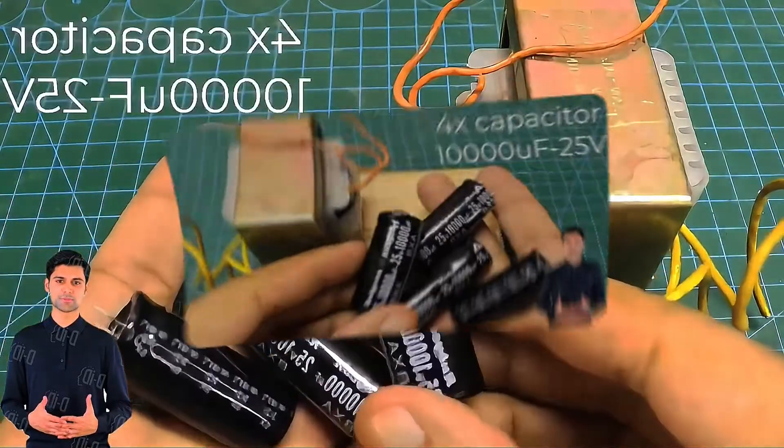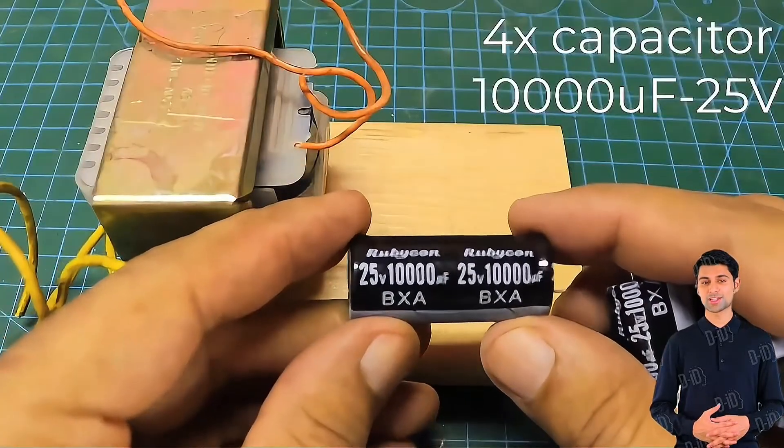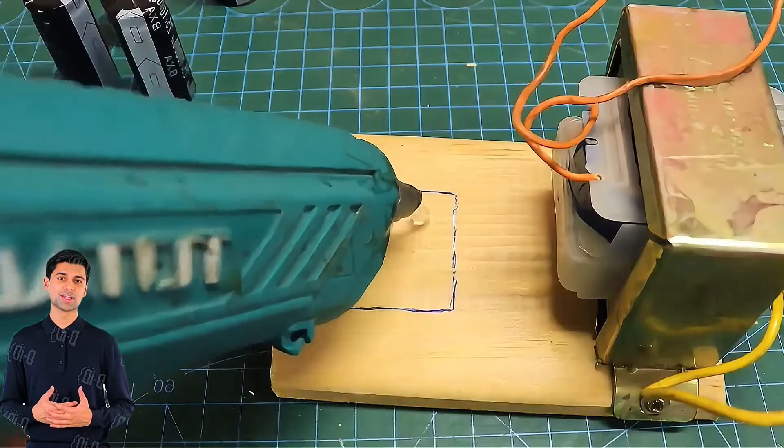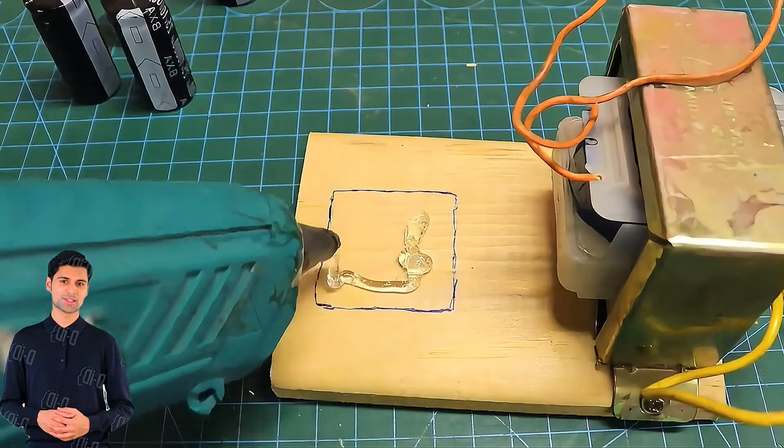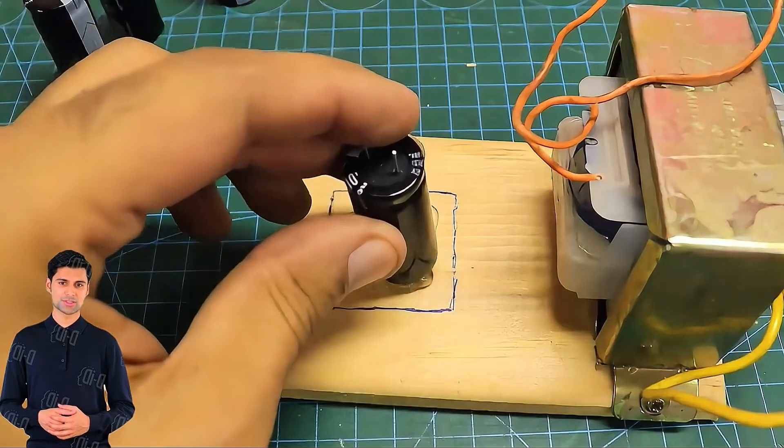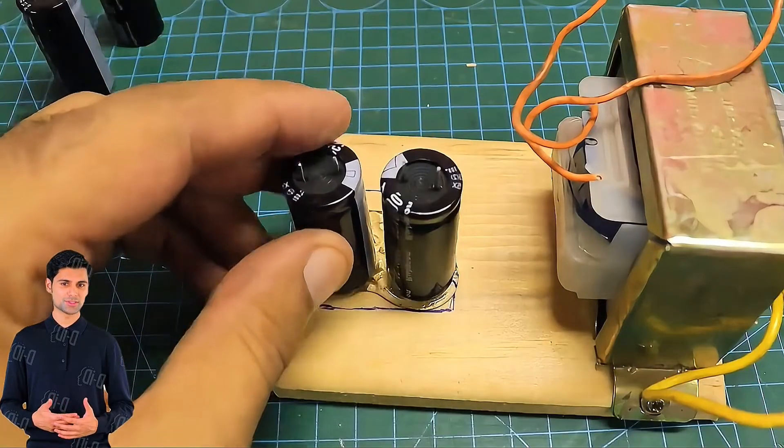The capacitor uses four electrolytic capacitors with a withstand voltage of 25 volts and a capacity of 10,000 microfarads. It is necessary to note that the withstand voltage of the capacitor needs to be more than 1.5 times higher than the output voltage of the transformer. Otherwise, it is easy to cause the capacitor to fail from overpressure.